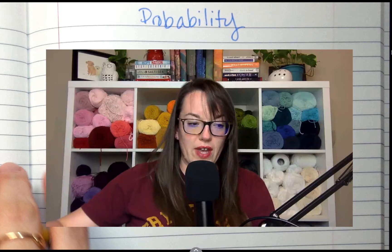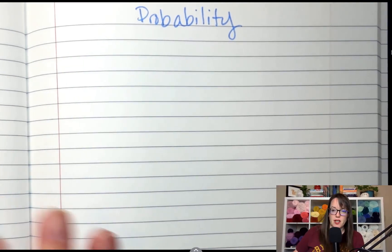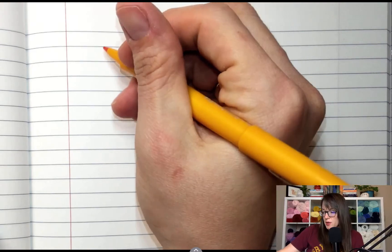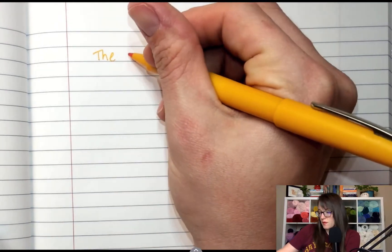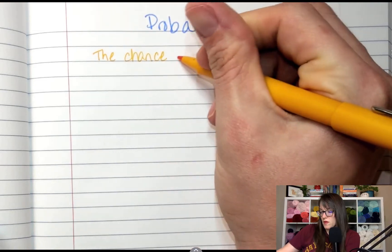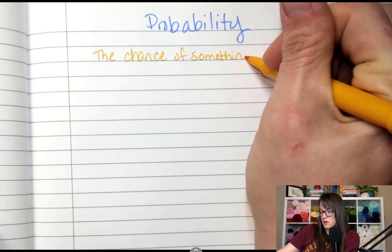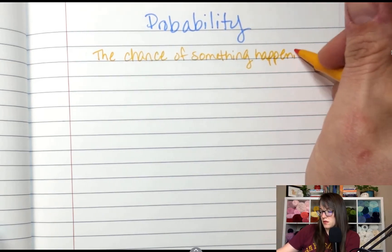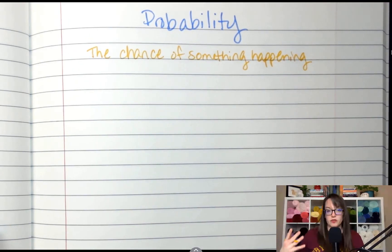So vocab, first of all, what is probability? When you hear somebody talking about probability or the chance of something happening, that's probability. So probability is the chance of something happening. It's the mathematical chance of something happening.